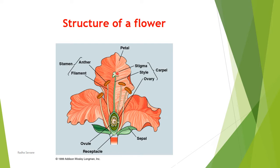The two important whorls essential for sexual reproduction are androecium and gynoecium. Androecium is the male reproductive whorl and gynoecium is the female reproductive whorl. Members of androecium are called stamens, and stamens consist of anther, filament, and connective. The female reproductive whorl, gynoecium, is made up of members called carpels. A typical carpel shows three parts: stigma, style, and ovary. Every part performs a particular function.